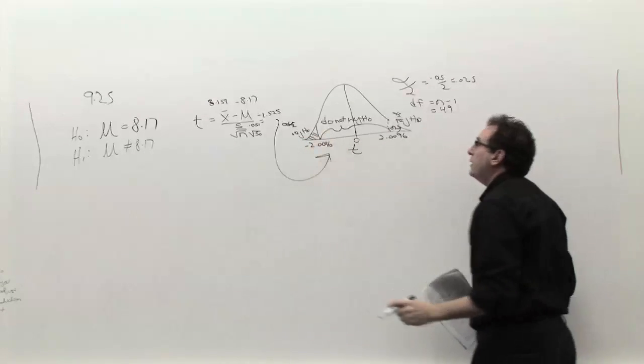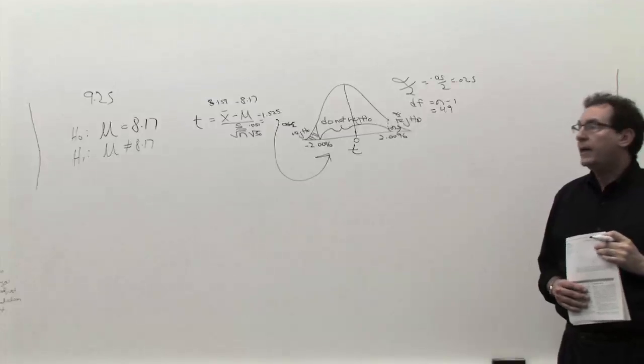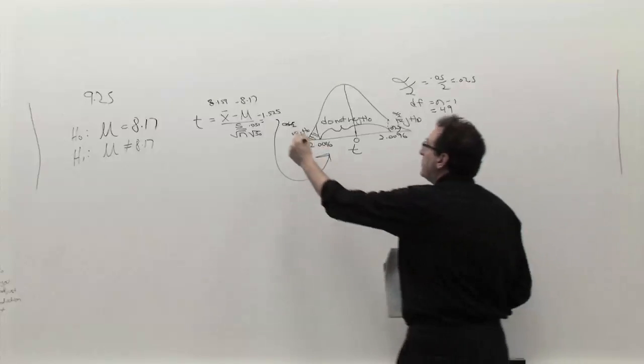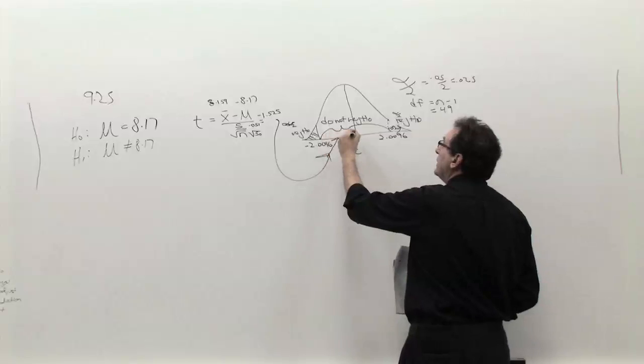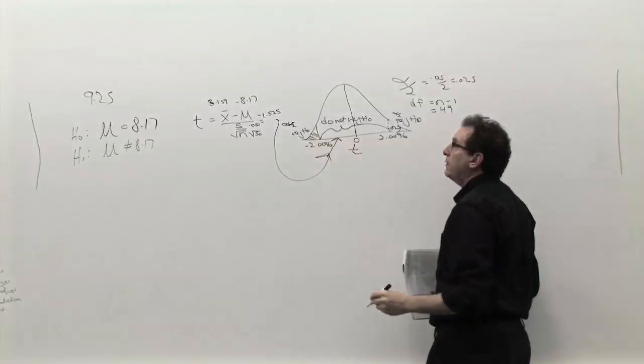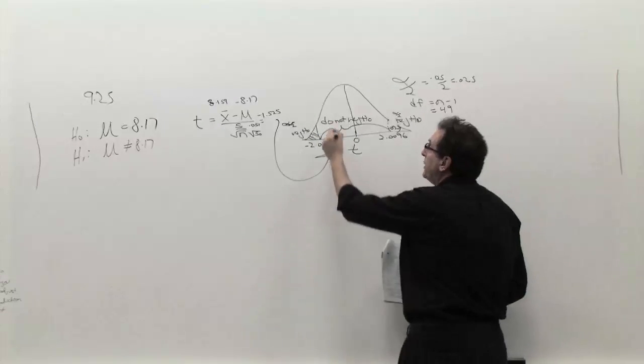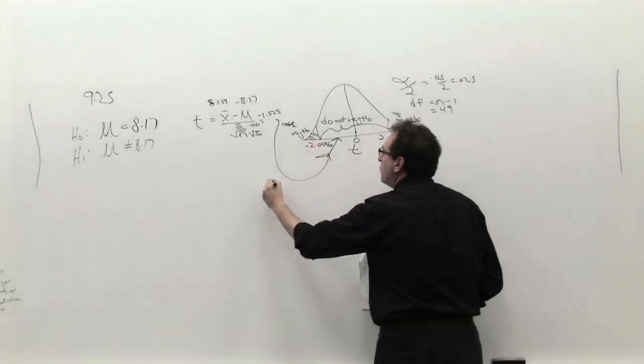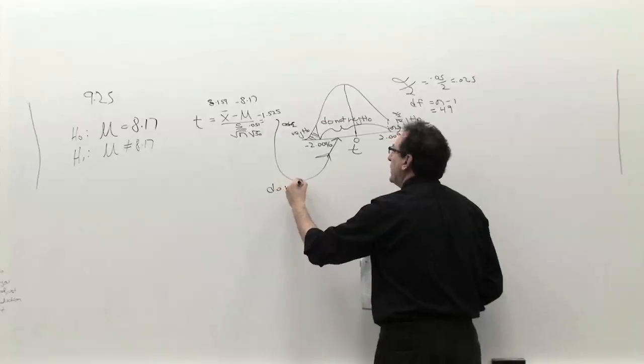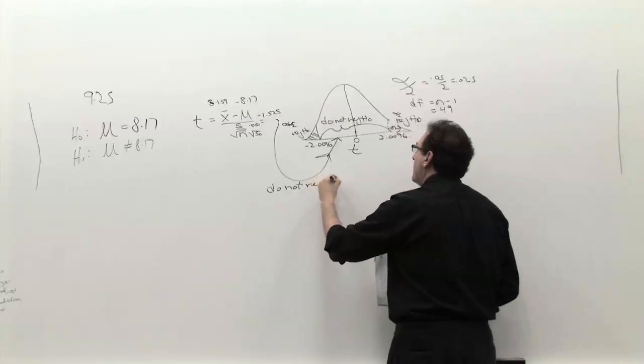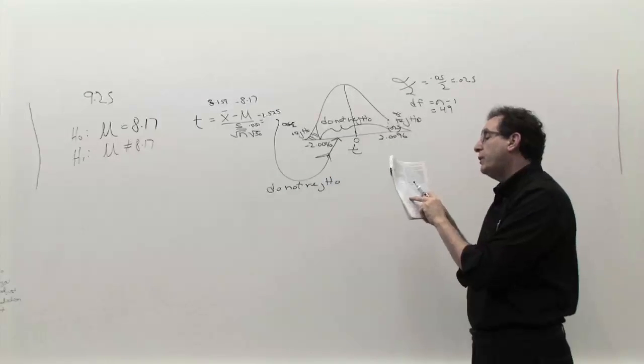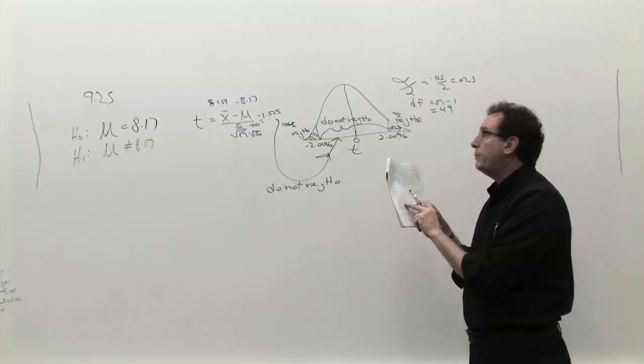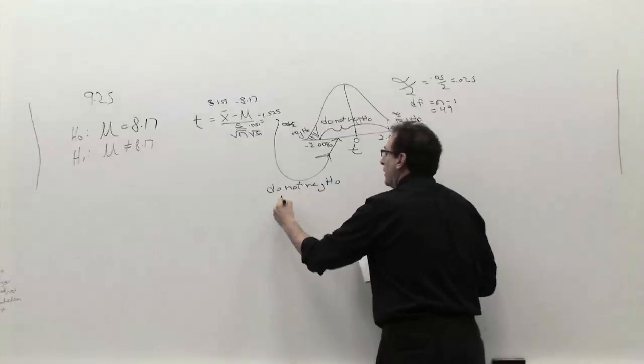And now we have step number 3 completed entirely. And step number 4 is to take this number, minus 1.5, and locate it, and of course, minus 1.5 is in between 0 and minus 2.0, you've got to know your negative decimal, of course. Which means we're in the accept region, or essentially, we formally do not reject null, the answer to the question. And the answer to the book's question, is there evidence the population is different from 8.17? I hope everybody realizes the answer is no. We don't have any evidence.